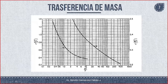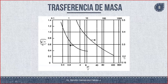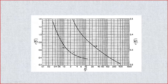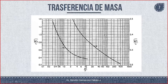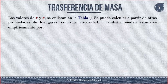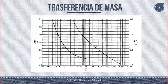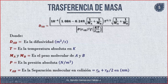Los valores de R y ε se listan en la tabla 3. El valor R_AB es igual a (R_A + R_B)/2, en nanómetros, y estos vienen de la tabla 3. Se puede calcular a partir de otras propiedades de los gases, como la viscosidad, o también se puede estimar empíricamente. Del anexo 3 podríamos encontrar estos valores; si no vienen, podemos calcularlos con otras expresiones.